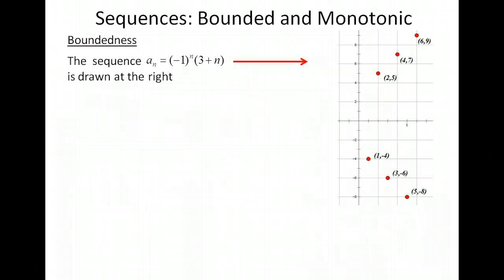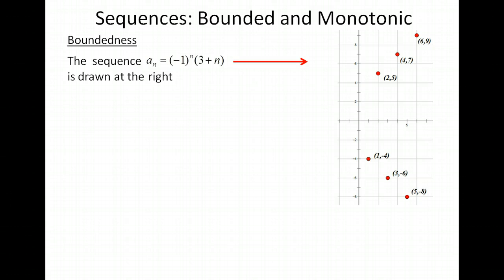For the second example — the alternating sequence negative 1 to the n times (3 plus n) — for even input values the output goes to positive infinity, and for odd input values it goes down to negative infinity. So there are no bounds on the high or low points. It's unbounded above and unbounded below.